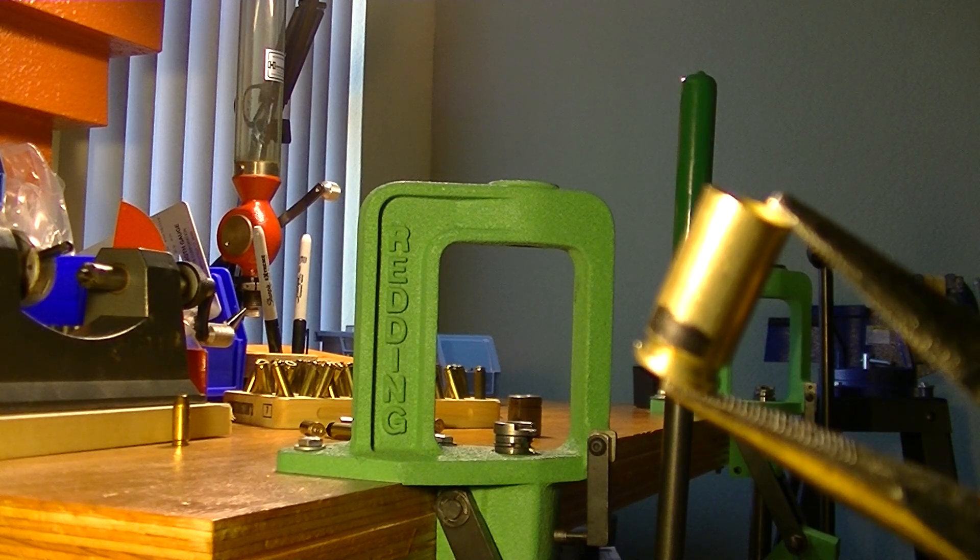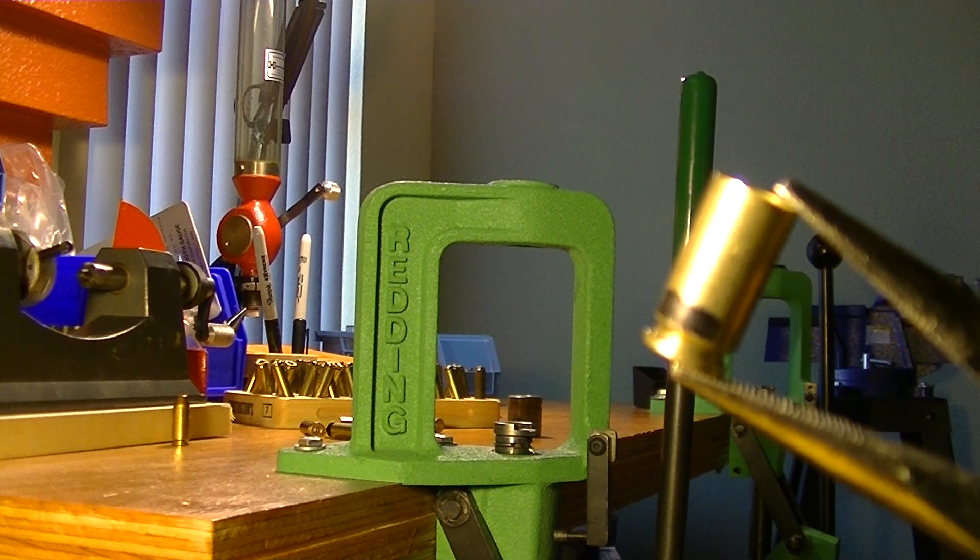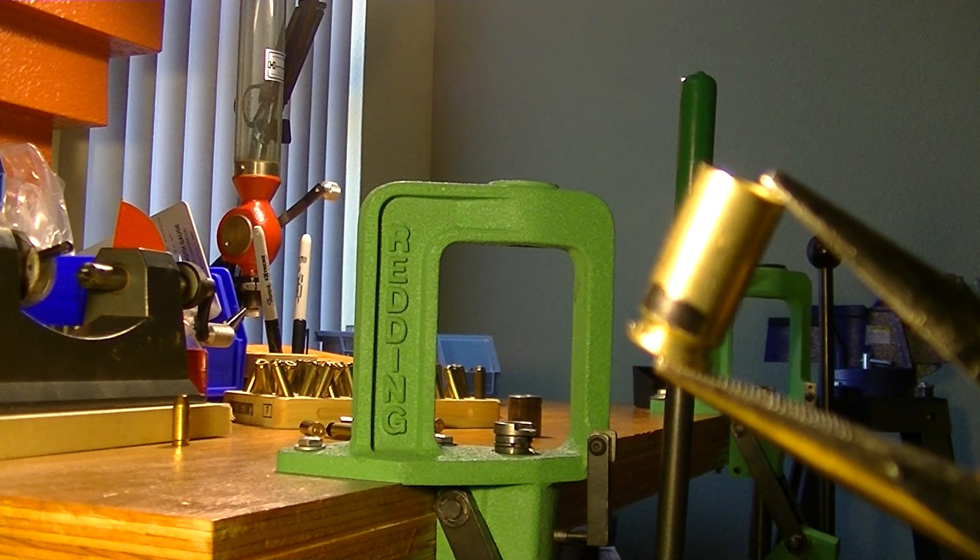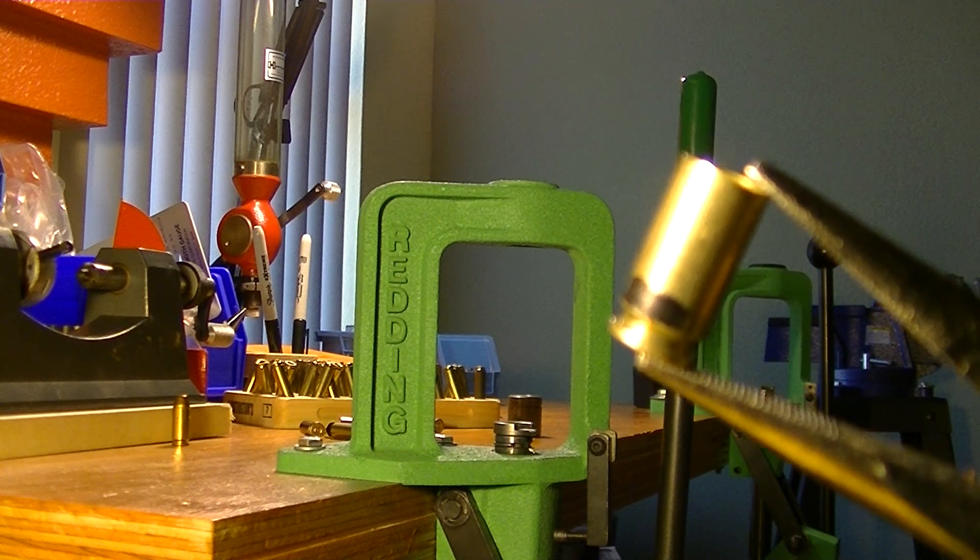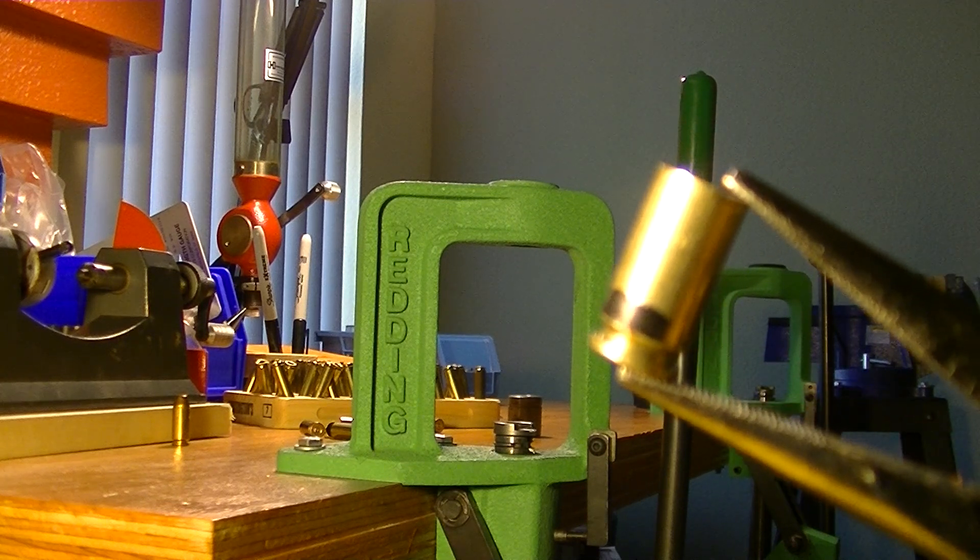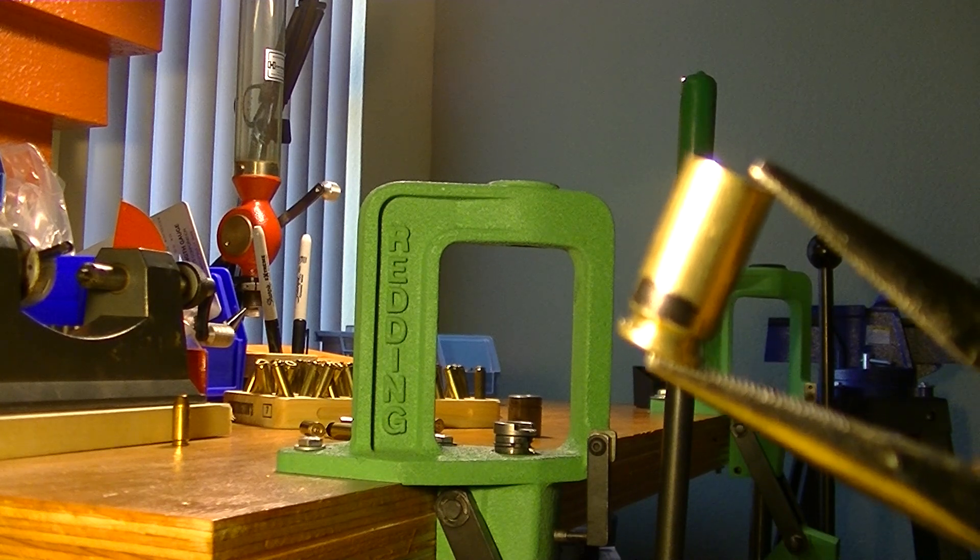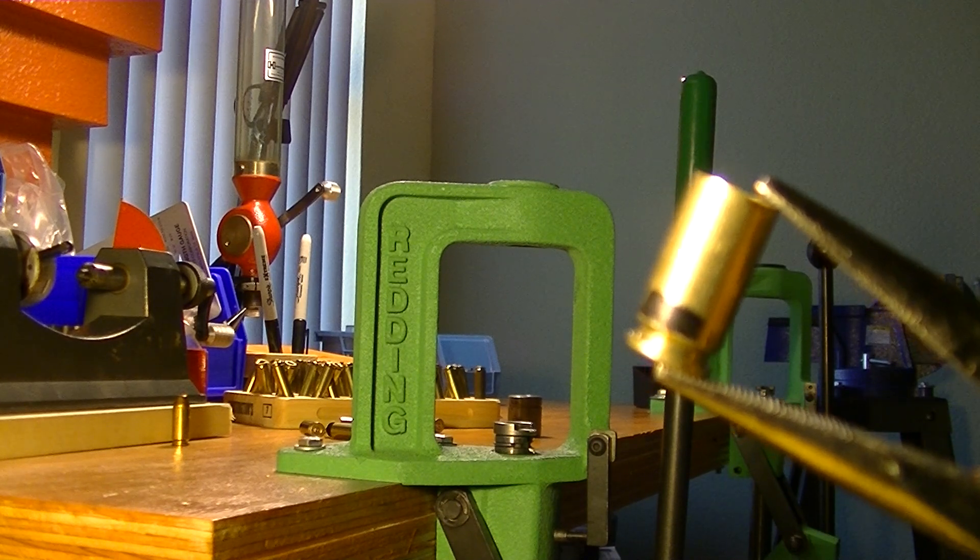I'm not sure you can see the black line there, the black marker line. There's a slight bulge there because it was fired in a gun with an unsupported chamber and my sizing die is not able to go all the way down to the rim because it's hitting the shell holder or shell plate.